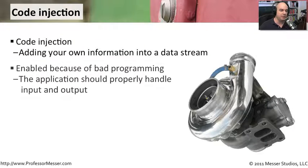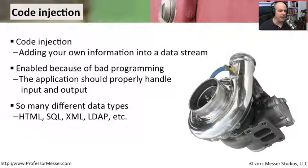There's many different types of code that you can inject into a stream of data. This is usually enabled because somebody's done a bad job of coding the program. Normally, applications should look at what people are using as input, clean it up, and make sure that people don't take advantage of these injection vulnerabilities. If you're properly handling the input and output from an application, you shouldn't be able to inject your own information into the middle of that.